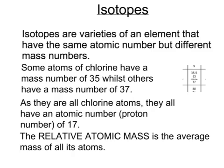So it must be something to do with the number of neutrons. Some atoms of chlorine have got 18 neutrons, so 17 protons plus 18 neutrons makes a mass of 35, whereas other chlorine atoms have got 20 neutrons, so 17 protons and 20 neutrons make a mass of 37.